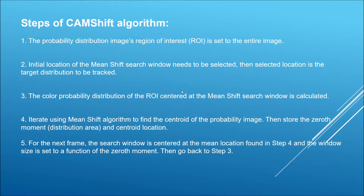The steps for the CamShift algorithm: first, the probability distribution of the image's region of interest is set to the entire image, so we can step-by-step modify our window size and concentrate on the tracking object. Second, the initial location of the Mean Shift search window needs to be selected — the user can define it in code or use a real-time interaction option to select the region to be tracked.